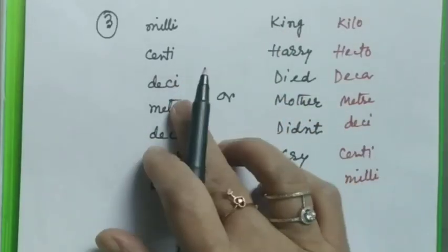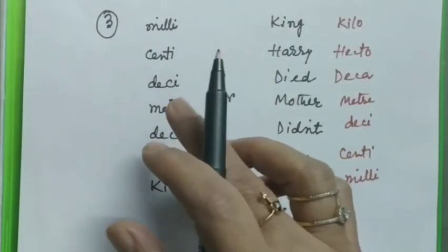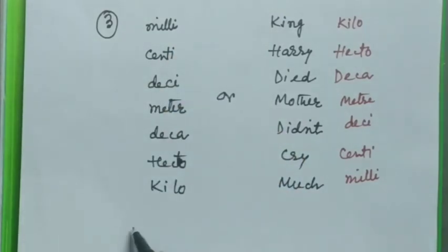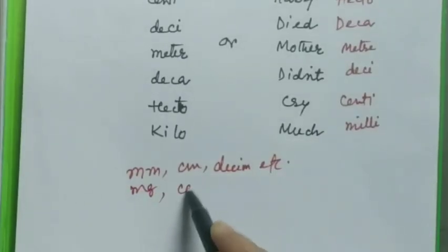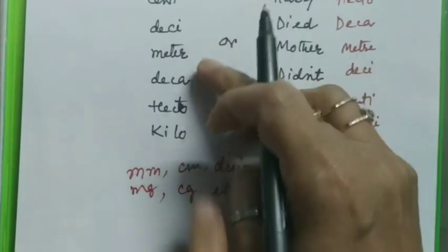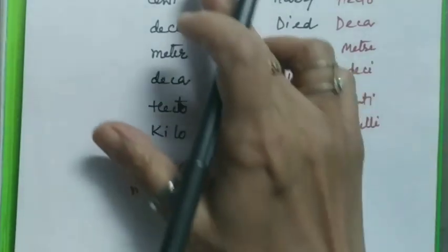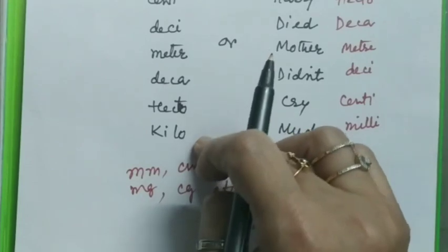These prefixes are same for all units like meter, gram, liter, second, etc. That means we can write millimeter, centimeter, decimeter, etc. Using gram also we can write milligram, centigram, etc. In that case this will become gram in place of meter. Here milli is the smallest unit and kilo is the largest unit.